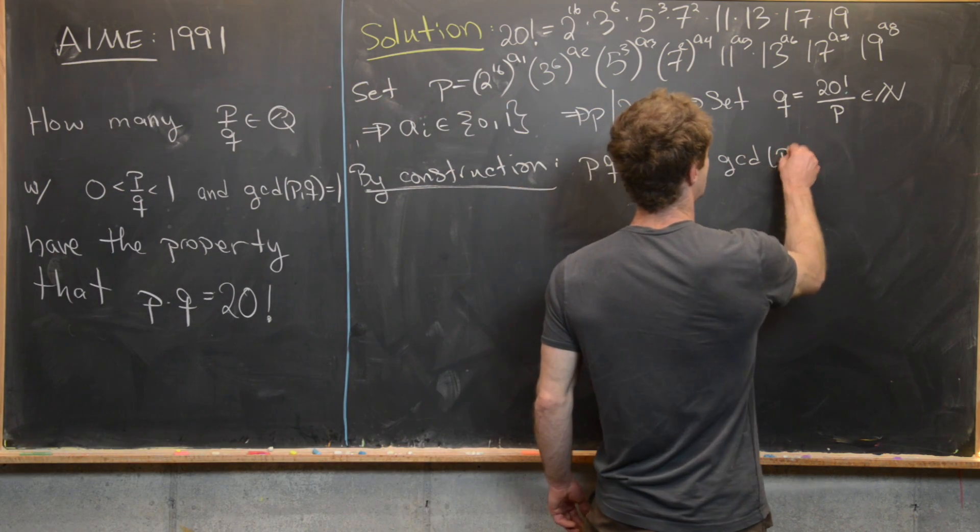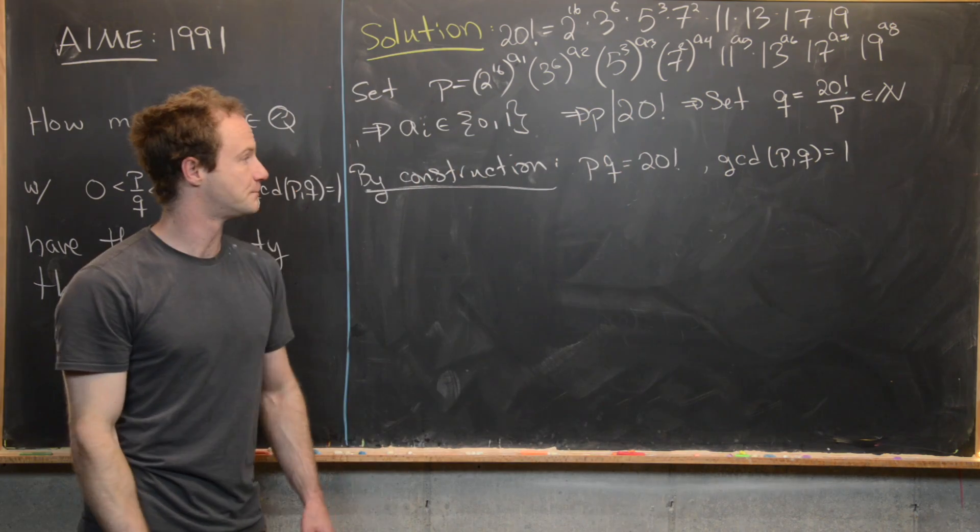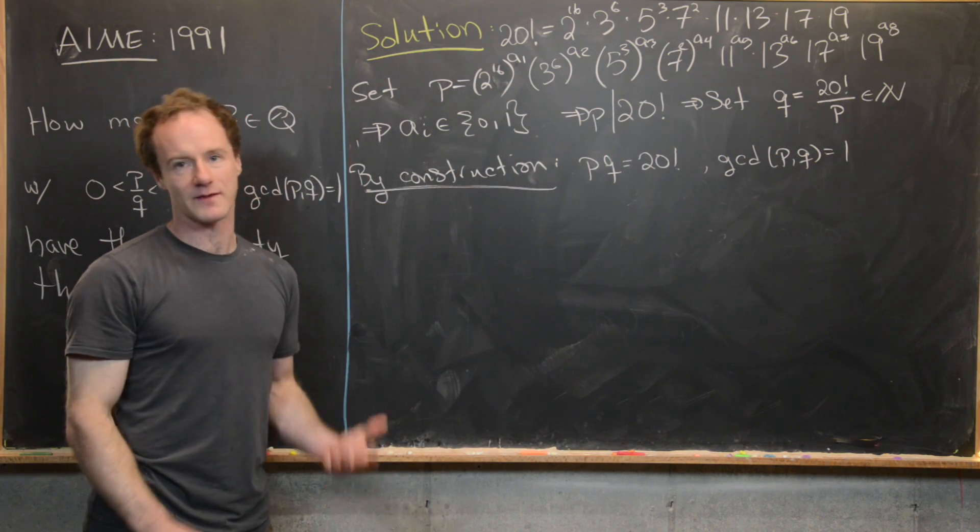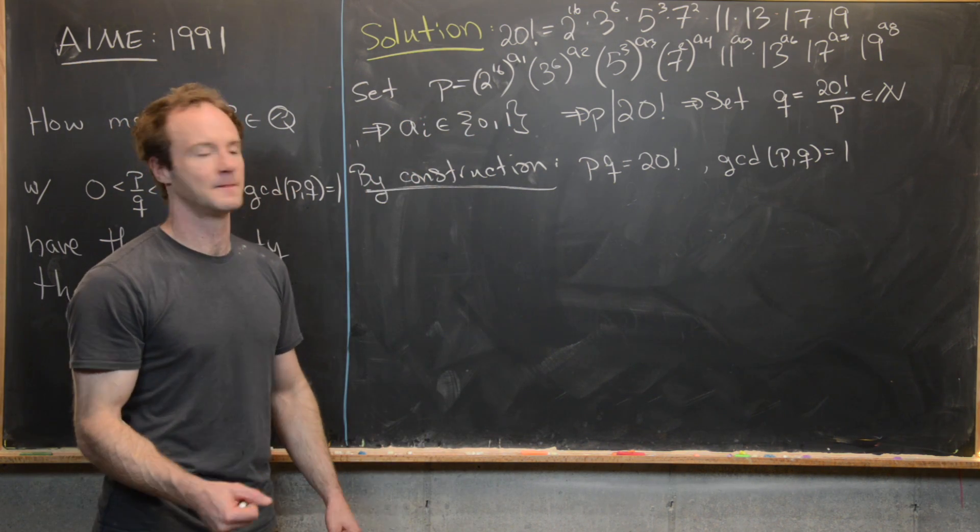And next, we have the GCD of P and Q is 1. In other words, P and Q are co-prime. And that's because they don't share any prime factors because of the way that we've constructed them.